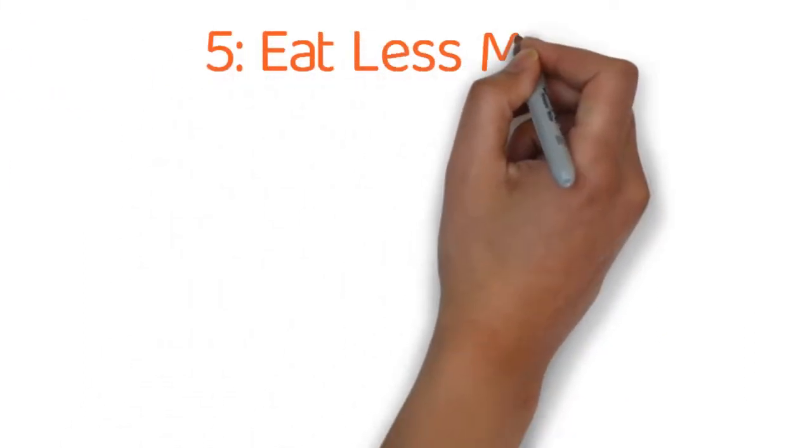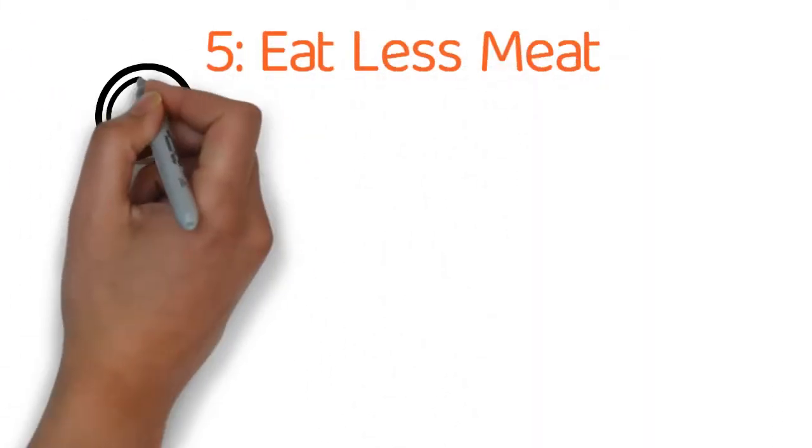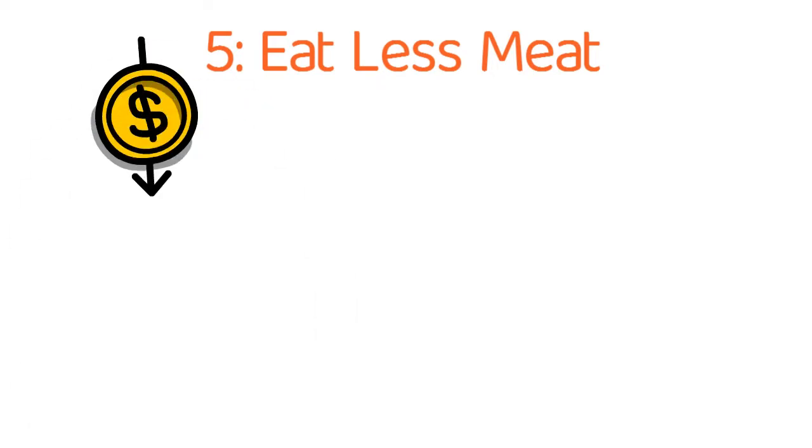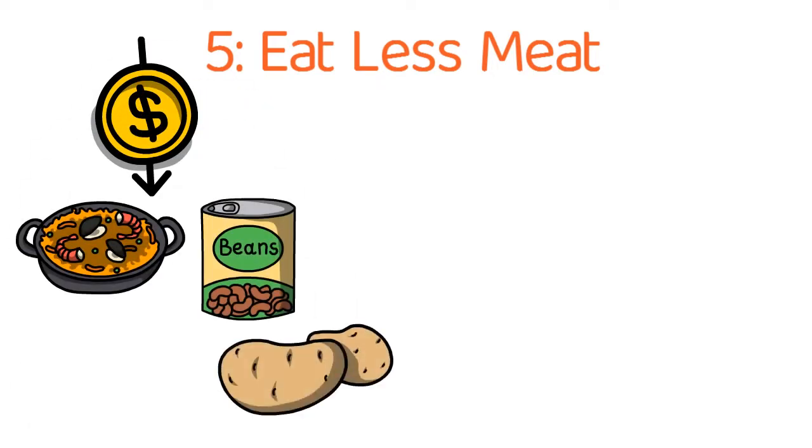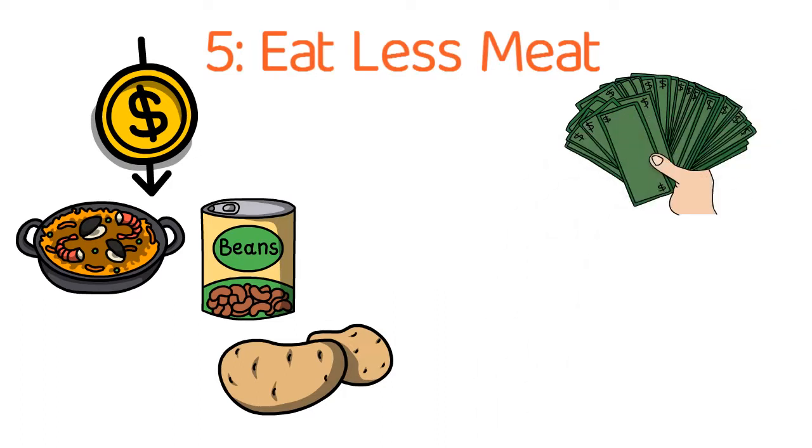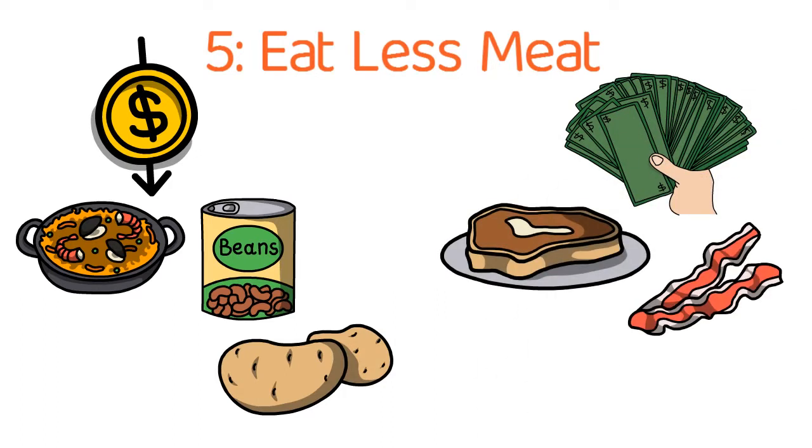Tip number five, eat less meat. Now some of the cheaper foods to buy are rice, beans, and potatoes. Some of the most expensive foods are things like steak, bacon, and ham.